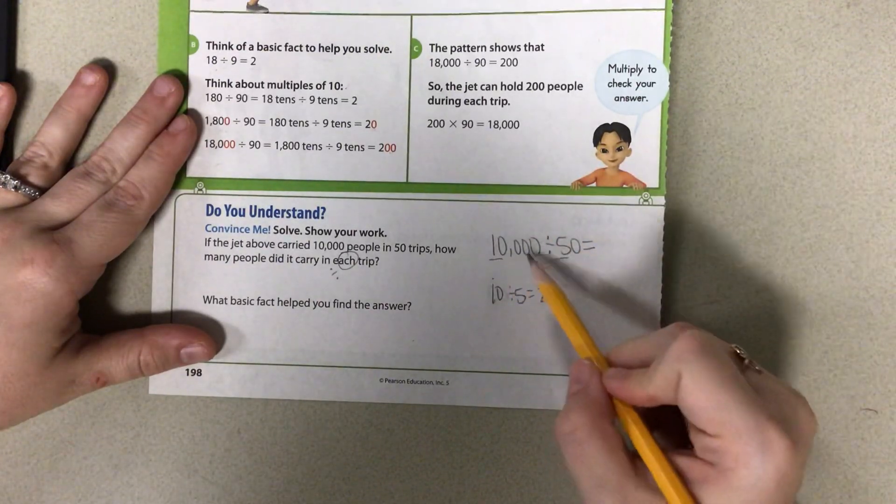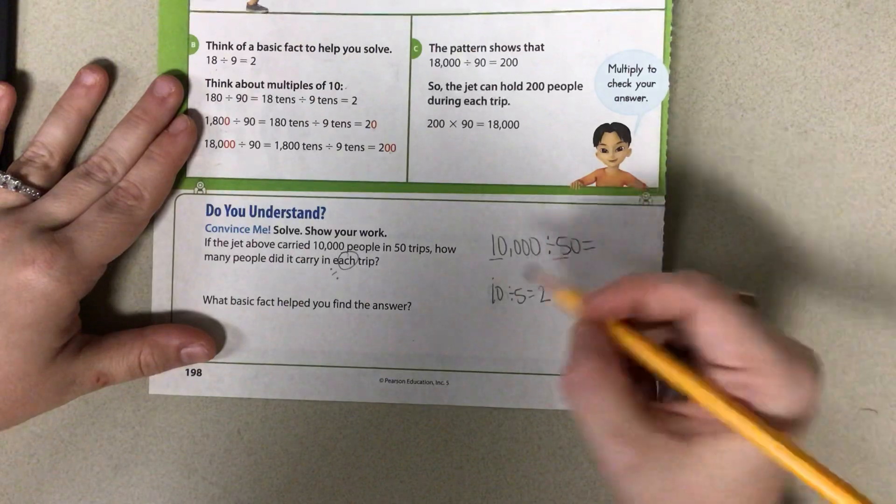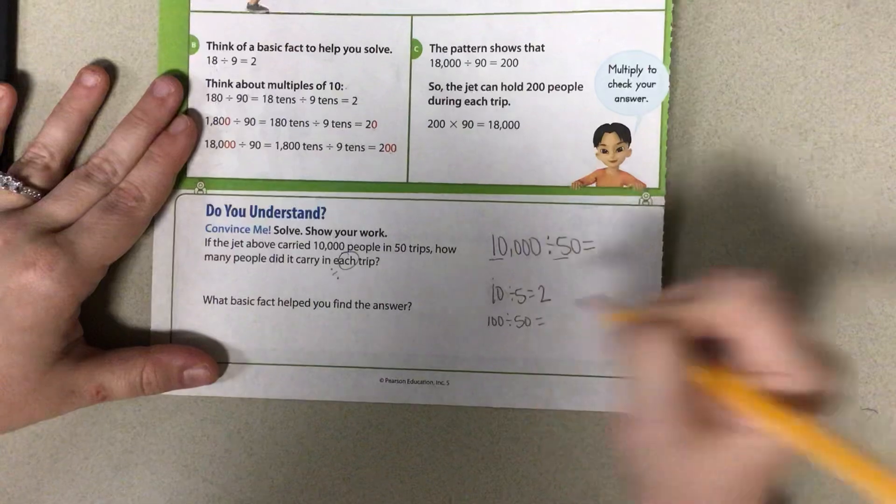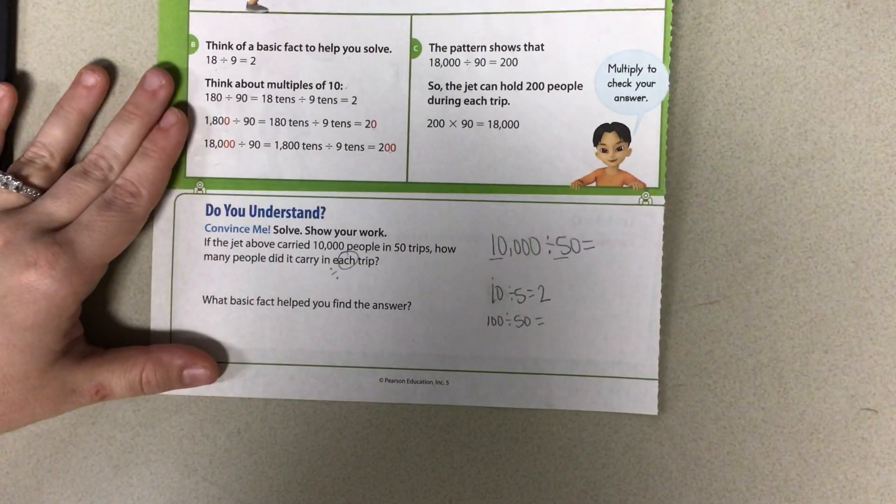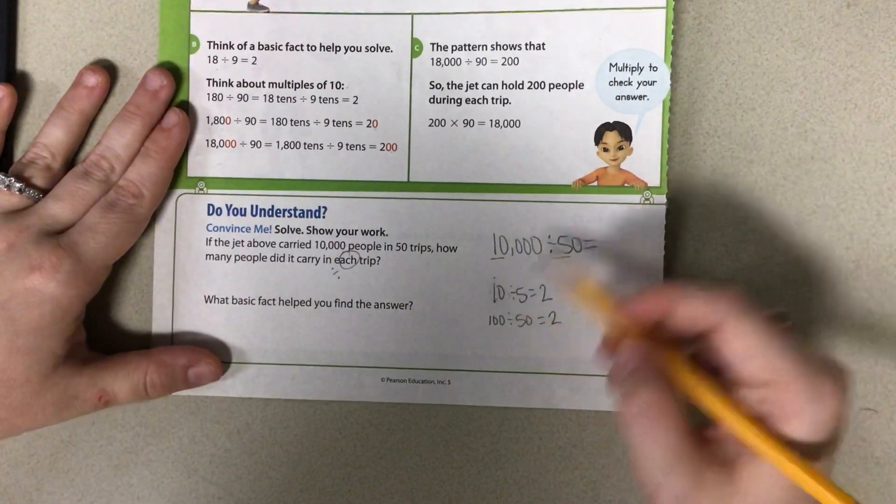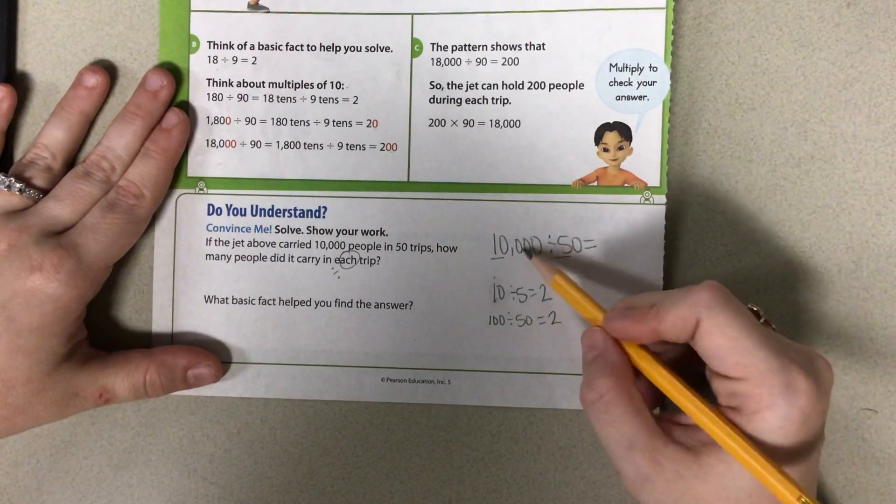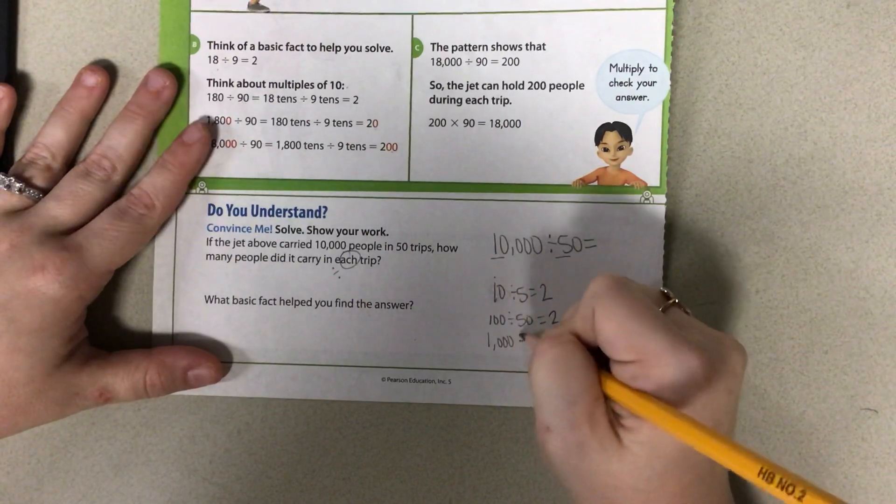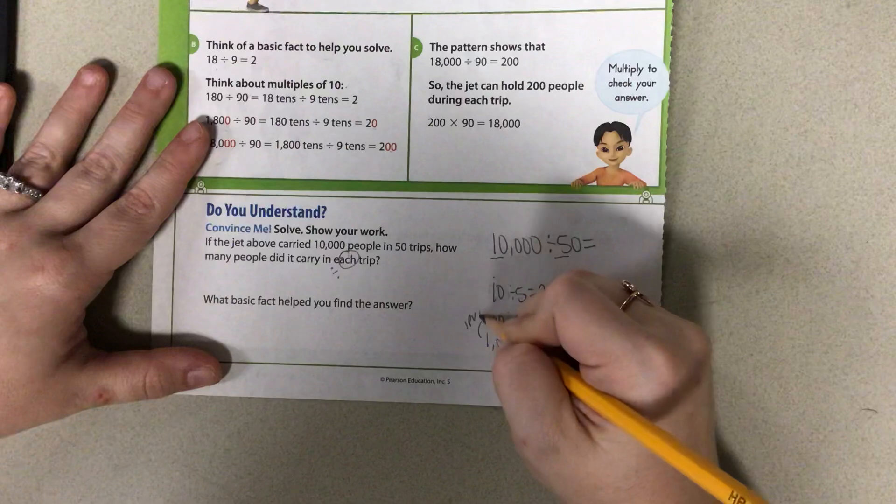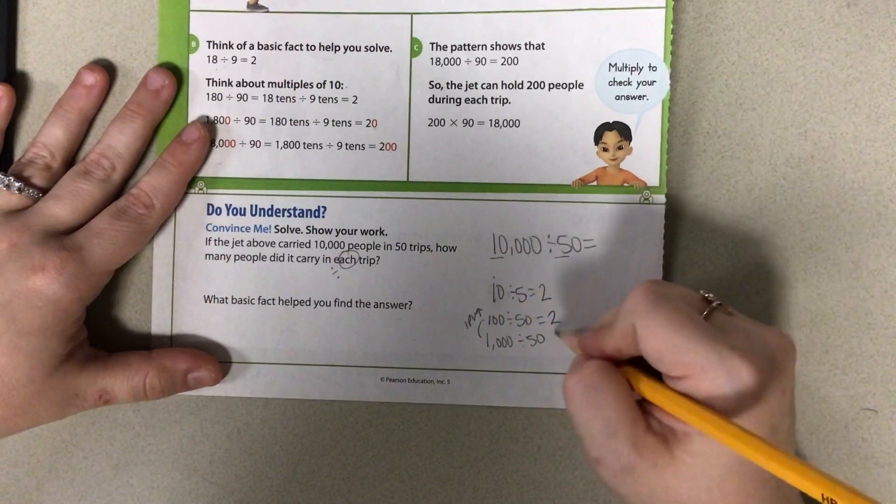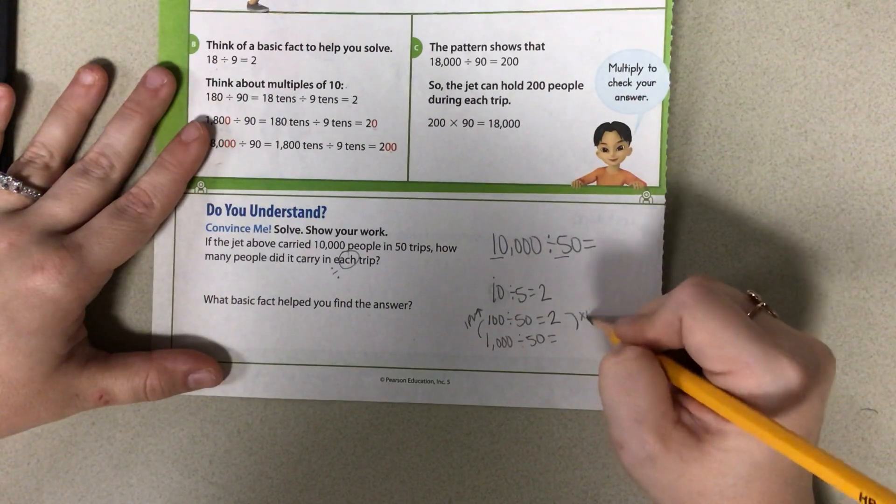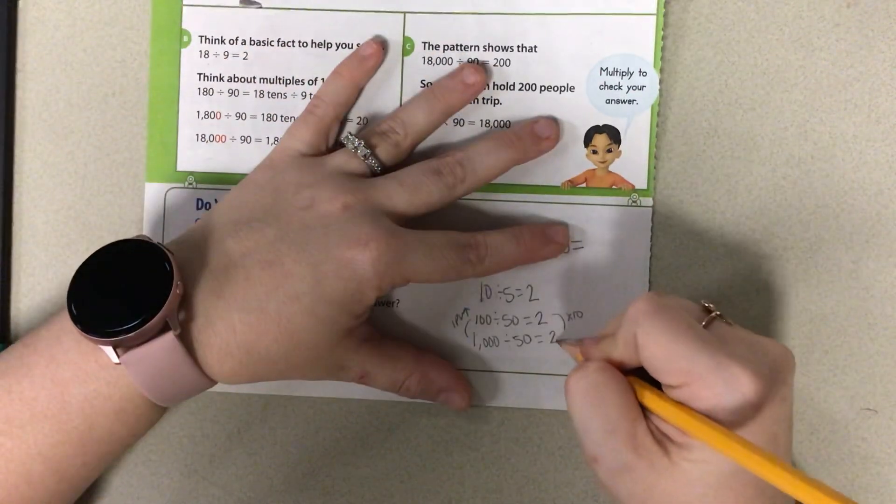We're going to work our way up into this 10,000 and this 50. Then I have 100 divided by 50 equals the same thing, 2. I got my 50 up there, but now I need to continue on here. Now I have 1,000 divided by 50. Here I got one place value larger, so I know I need to times it by 10. So 2 times 10 would be 20.